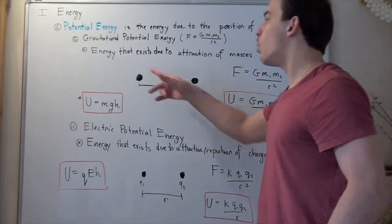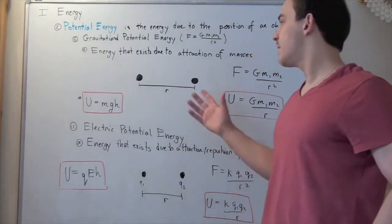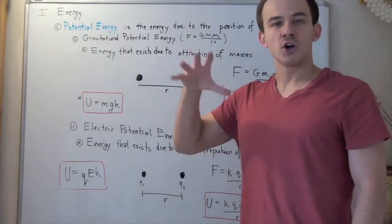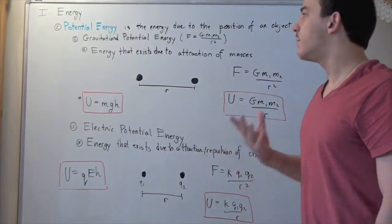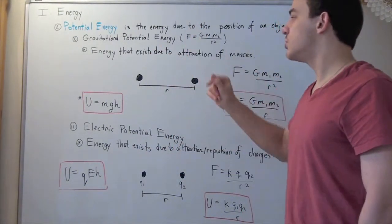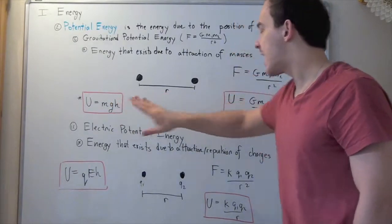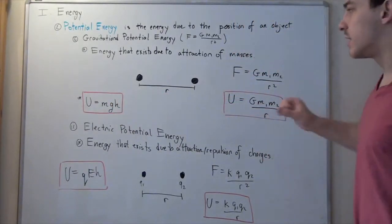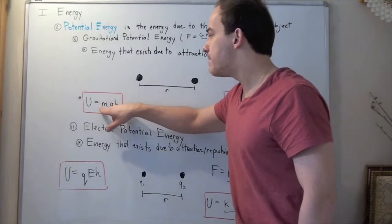Now, if I'm talking about one mass being the Earth and a second mass being some object on the Earth's surface, I could find my gravitational potential energy using this formula, which actually comes from this formula. So, I take my mass, I multiply it by G, my gravitational field that's created due to the Earth, and multiplied by my H, my distance.